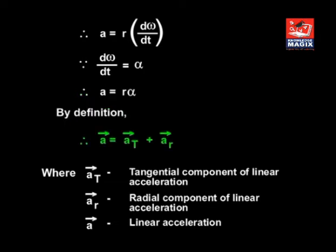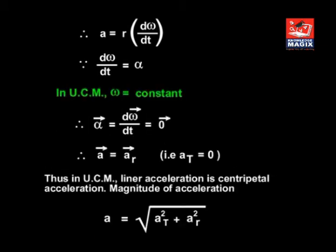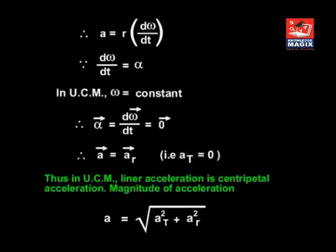By definition, the total linear acceleration ā = āt + ār, where āt is the tangential component and ār is the radial component of linear acceleration. In uniform circular motion (UCM), ω is constant, therefore ᾱ = dω̄/dt = 0, so ā = ār, meaning the tangential component at = 0. Thus in UCM, linear acceleration equals centripetal acceleration. The magnitude of acceleration is a = √(at² + ar²).